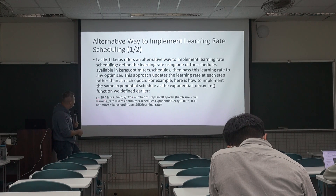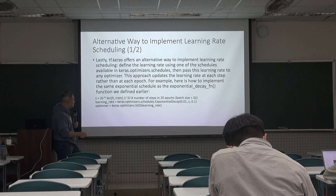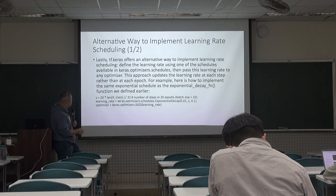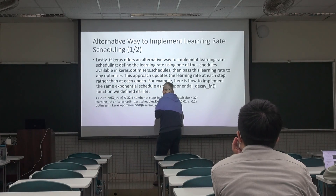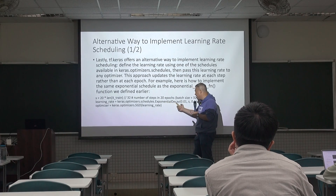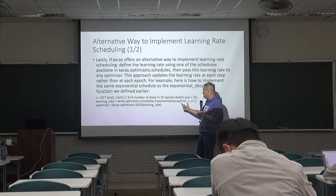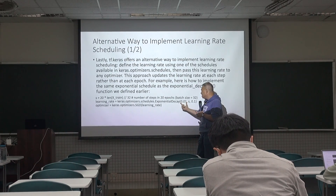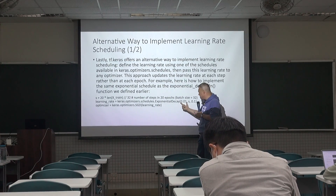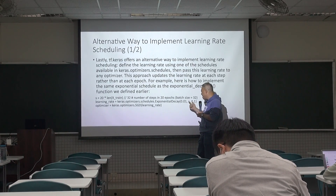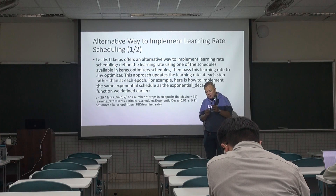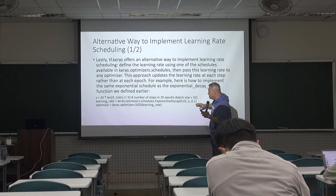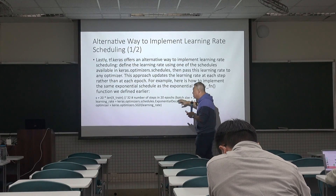Here is an example implementing the same exponential schedule using the ExponentialDecay function. We define the number of steps in 20 epochs with batch size 32, so s equals 20. You call keras.optimizers.schedules.ExponentialDecay — already defined for you — and specify your s value, the initial learning rate eta_zero, and the decay rate, controlling how many times you reduce the learning rate.